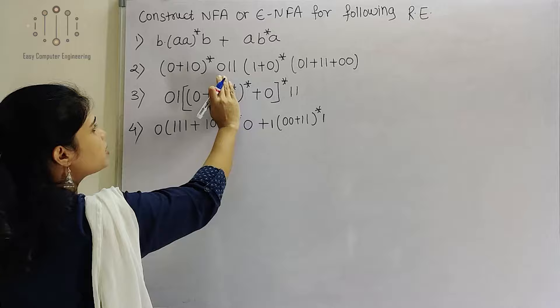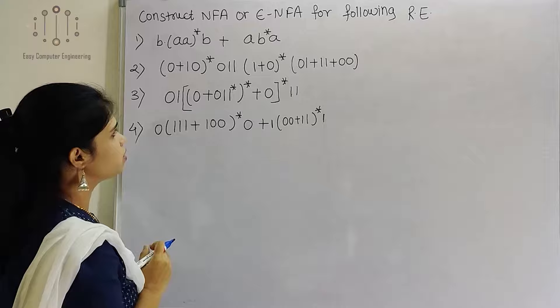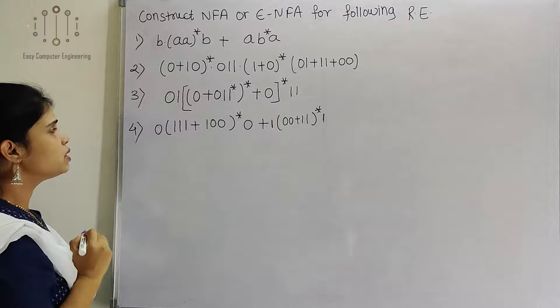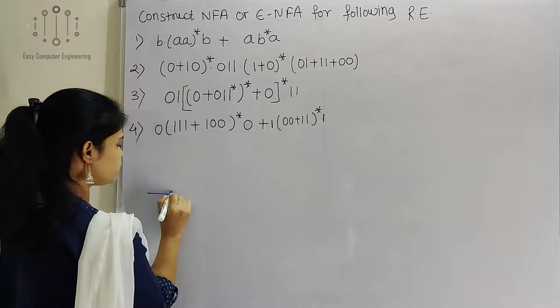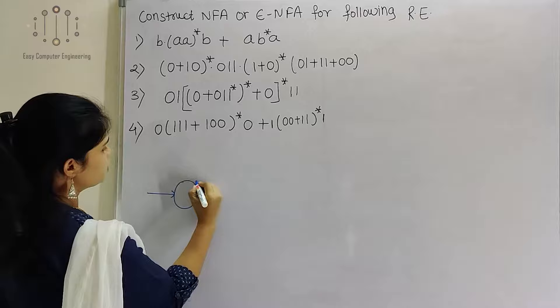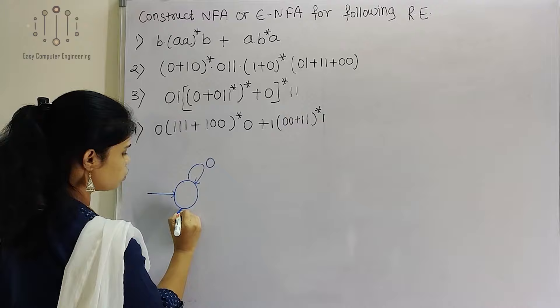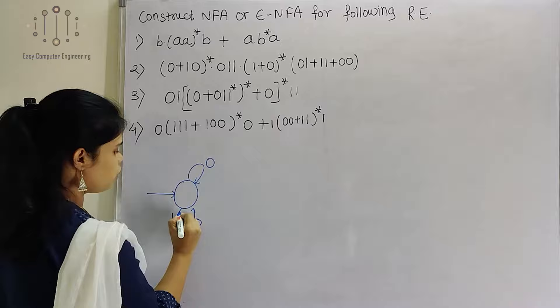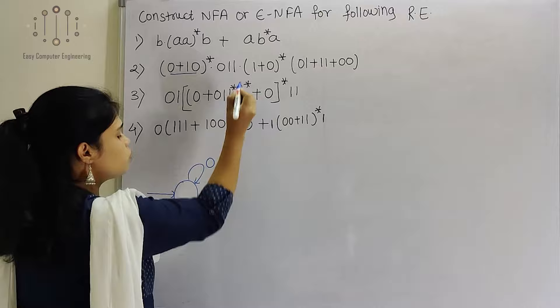The second example has the regular expression (0+1)*·011·(1+0)*·1100·01. There is a concatenation between these parts. So starting with (0+1)* — how can we show this? Here we will take either 0 or 1, showing the 0 transition and the 1, then 0 transition.